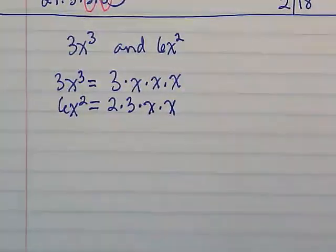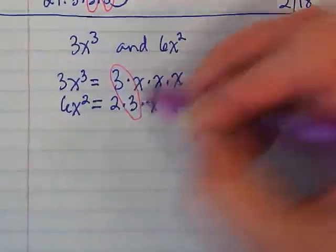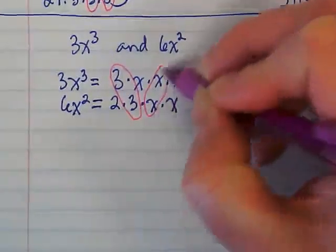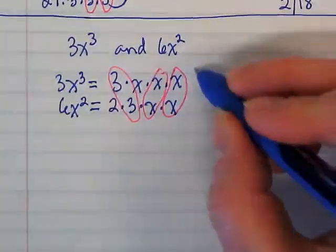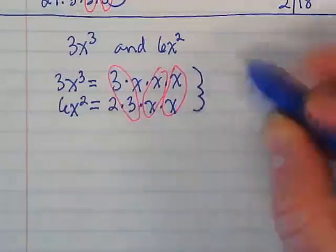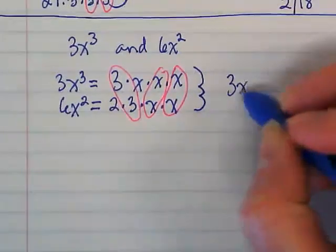What are my common factors? I have a 3, and I have 2 x's. So the GCF of 3x to the third and 6x squared is 3x squared.